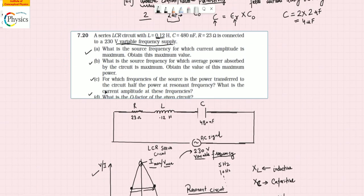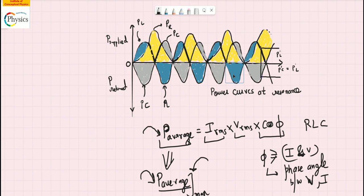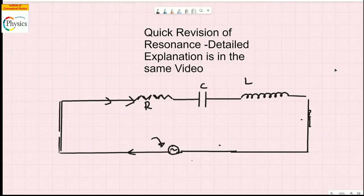The emphasis of part one was on current. Now let's talk about part number two. The average power consumed in an RLC circuit with a phase difference between voltage and current is given by a specific formula. Average power always refers to true power — which is the resistive power, or the power being consumed by the resistor.